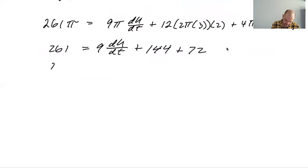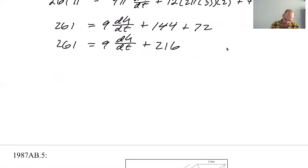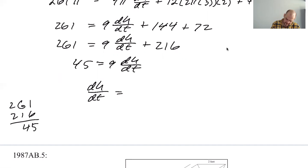261, nine DH DT. I think everything was a multiple of three, but I decided to ignore that. 216. This is sort of embarrassing, but not really. 45 equals nine DH DT. So DH DT, 45 divided by nine, five. I believe it's centimeters per minute.